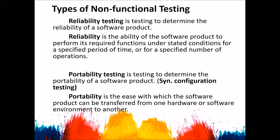The next type is reliability testing. Reliability testing is testing to determine the reliability of a software product. Reliability is the ability of the software product to perform its required functions under stated conditions for a specified period of time or for a specified number of operations. During this testing, we measure how reliable the application is.